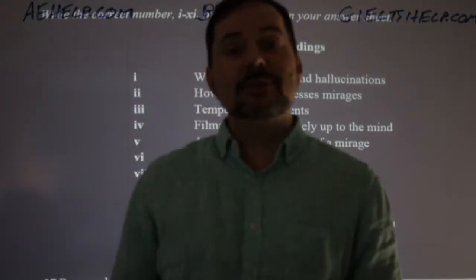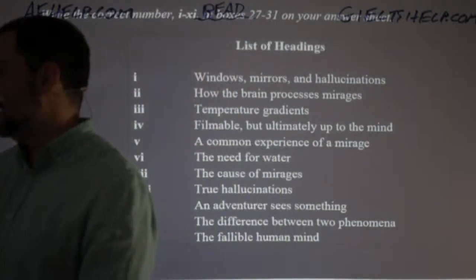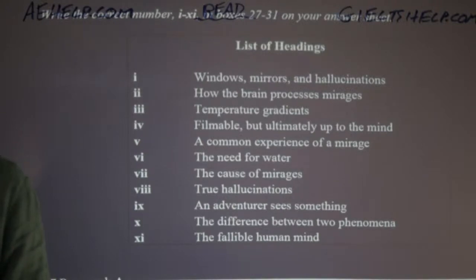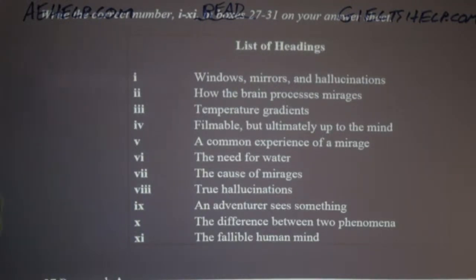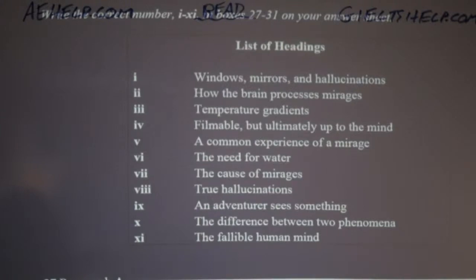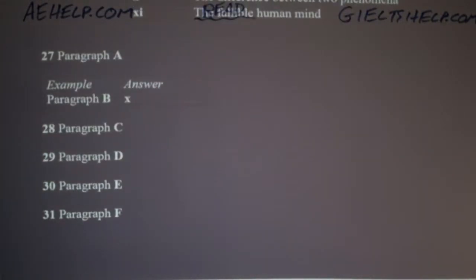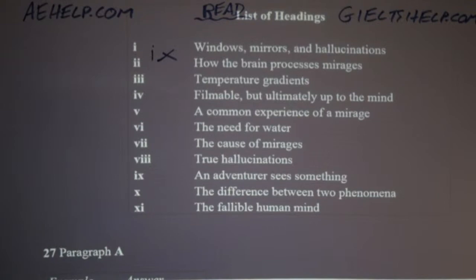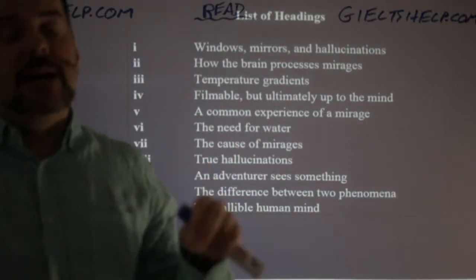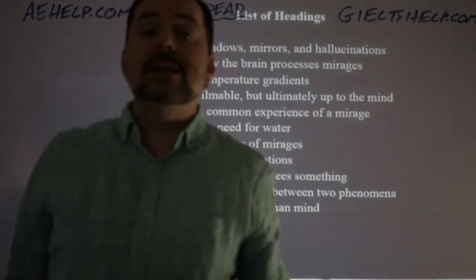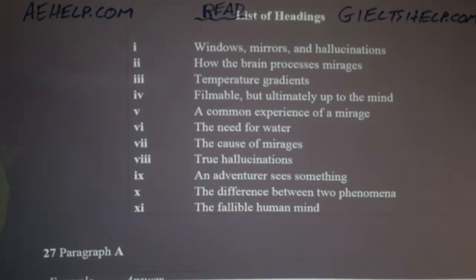Many are getting this wrong, and I'll explain why. June and Andre correctly say it's number nine — IX. Why did others choose number five? When studying IELTS, it's very important to figure out why you made a mistake. Paulo says 'nine is closer than five.' Carolina says 'it doesn't say mirage in the text.' You're close — it doesn't say it's a common experience. That's the key distinction.